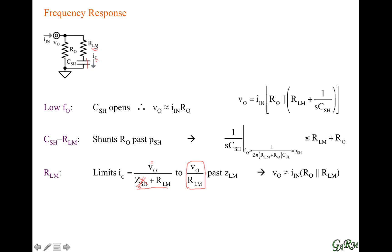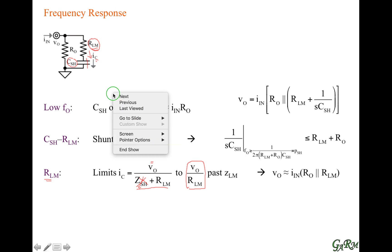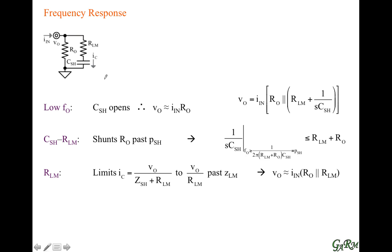Going back to the circuit: at low frequencies, the capacitor current limits this parallel current. But at high frequencies, this resistor current limits the capacitor current. So the effect of the resistor is to current-limit the effect of the capacitor current. At high frequencies, since the capacitor becomes a short circuit, the input current flows into the parallel combination of just two resistors with no effect of the capacitor. That ohmic translation becomes insensitive to frequency.